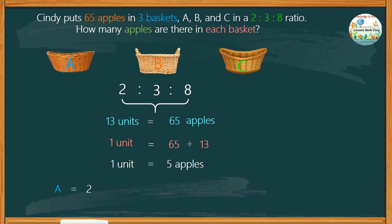Now we can find the number of apples in each basket. Basket A has 2 units of 5, which is equal to 10 apples.